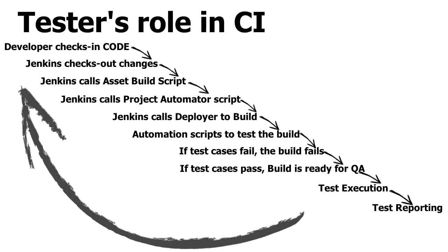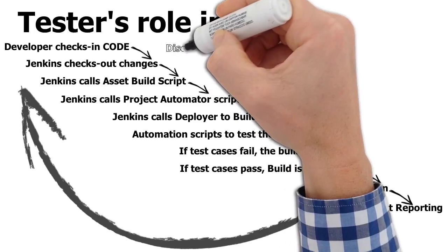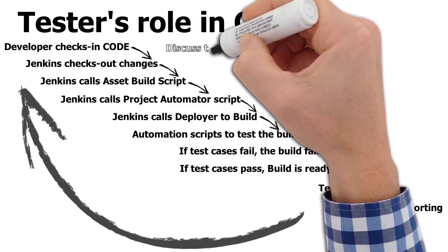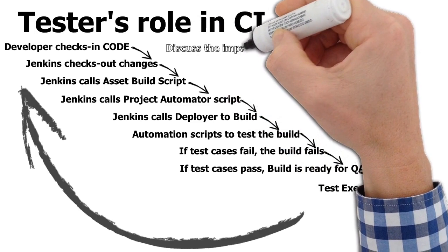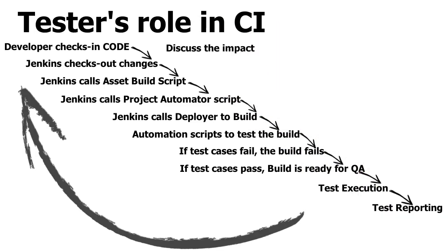QA provides a test report, and all functionality that is broken and all test cases that fail are reported back to the developers. The developer then follows the whole process again. So you can see it is a continuous process in which development and testing go hand in hand.